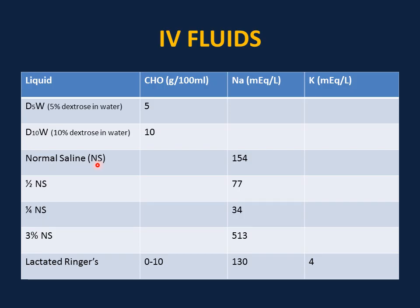Normal saline is an isotonic solution commonly used as a volume expander for boluses and in emergencies. It has 154 mEq of sodium and does not have potassium or sugar. Half normal saline has 77 mEq per liter. Quarter normal saline has 34 mEq of sodium per liter. 3% normal saline is a hypertonic solution with 513 mEq of sodium per liter, used in emergencies such as symptomatic or severe hyponatremia.